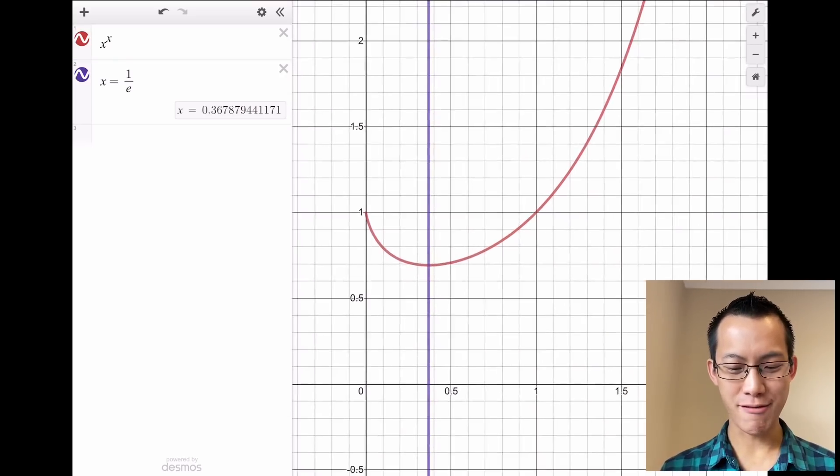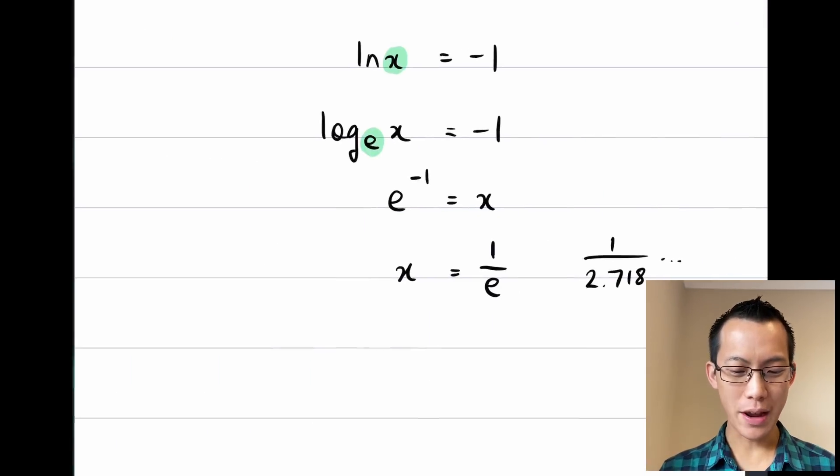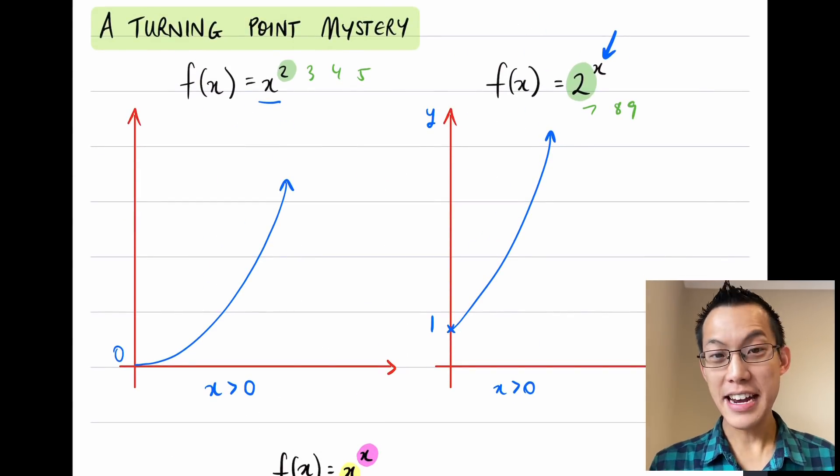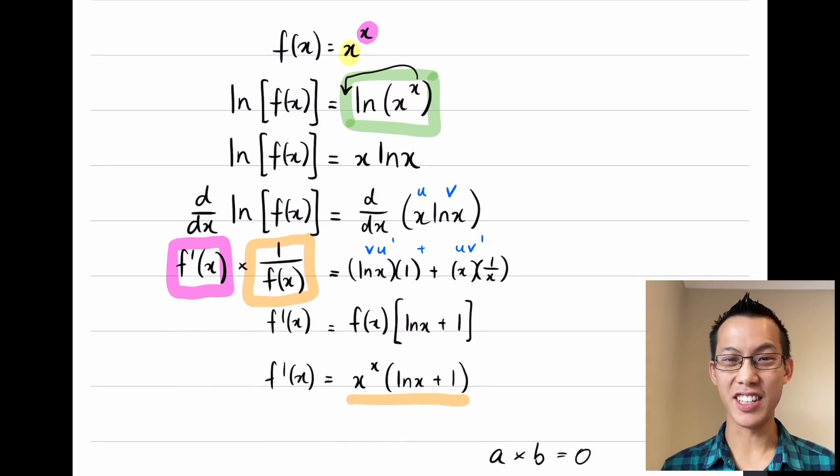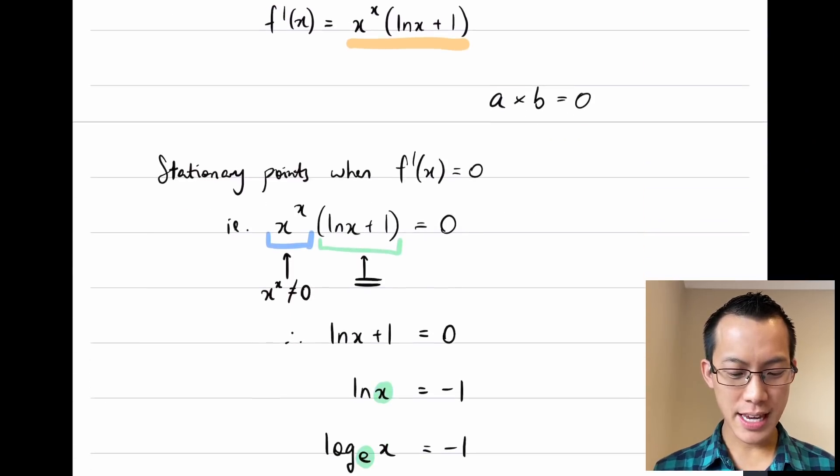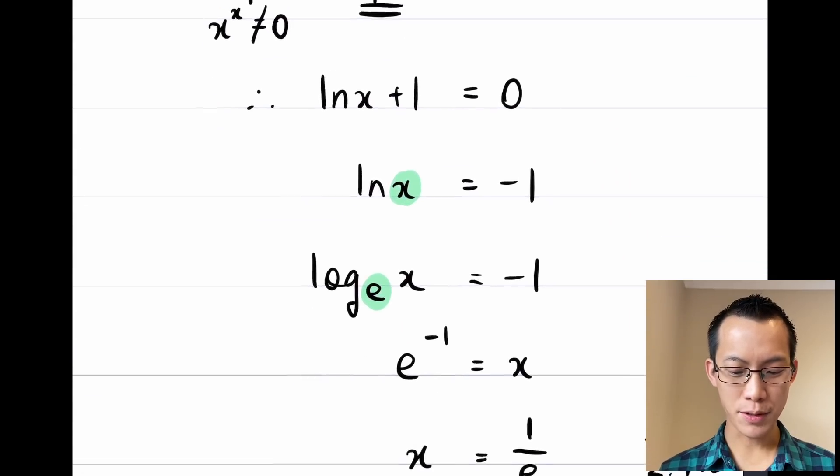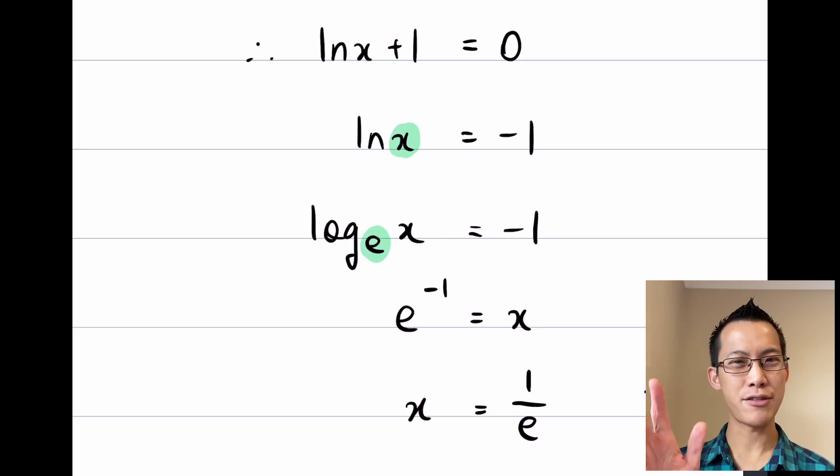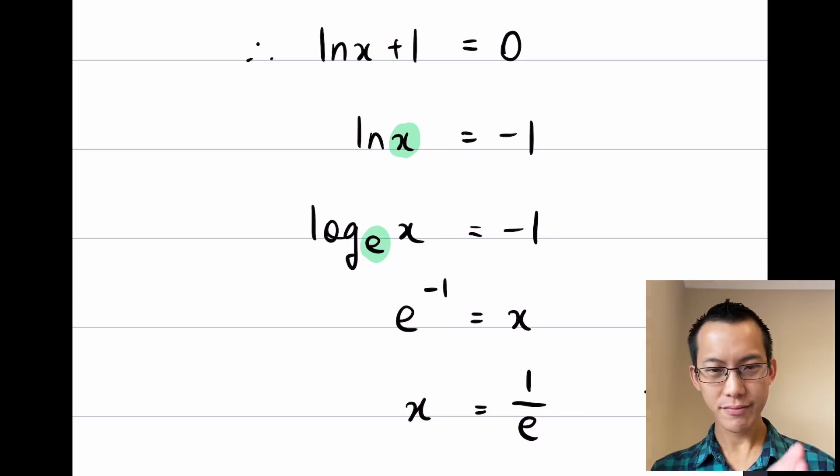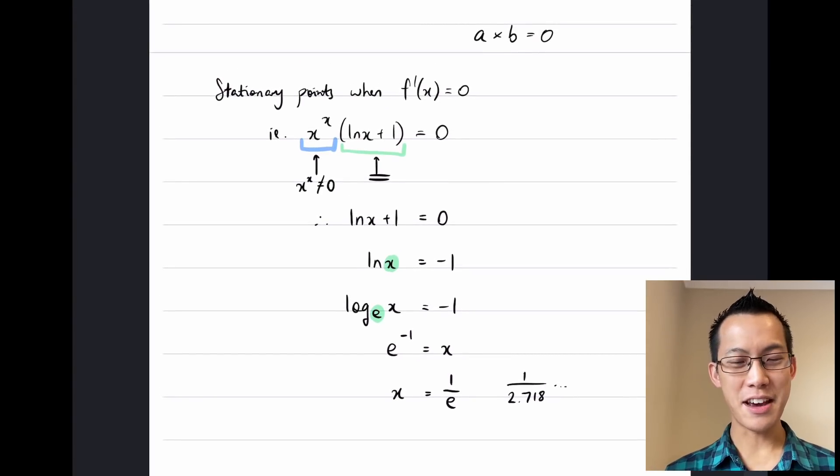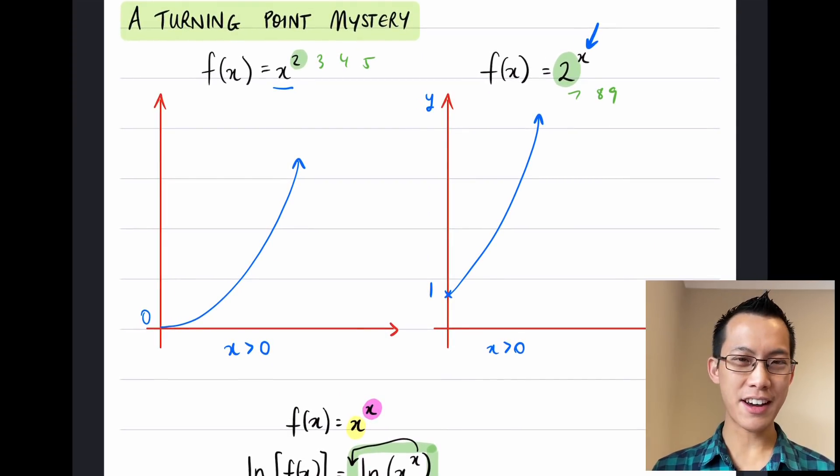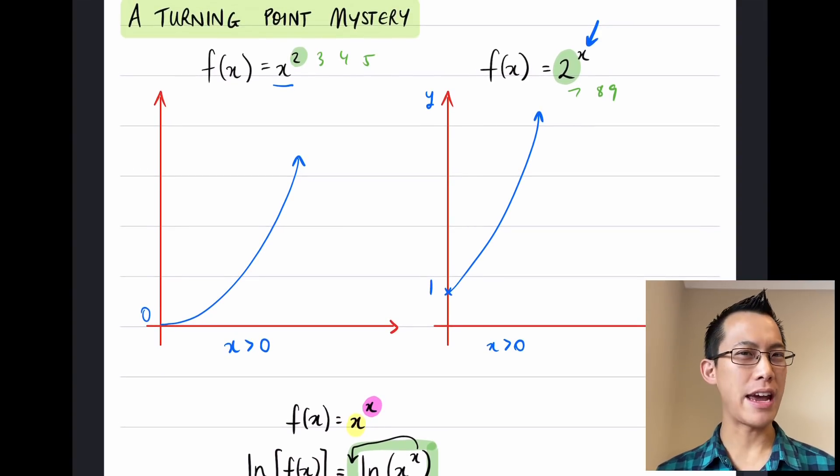In summary, this turning point mystery - why does this function have a turning point when the polynomial and exponential we came from didn't have turning points in the domain we were interested in? This is one of those counter-intuitive results revealed by calculus. When you look at the derivative, you can see there must be a stationary point. We can also locate its position by solving for when the derivative equals zero. I know it looks like you can't differentiate it to begin with, but using all the tools that we knew - log rules, product rule, chain rule, and not giving up - you can see this result. Hope it makes sense and that it's an interesting result for you.